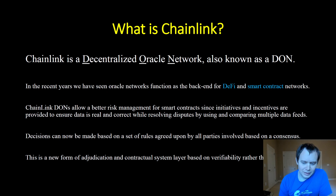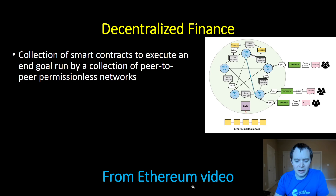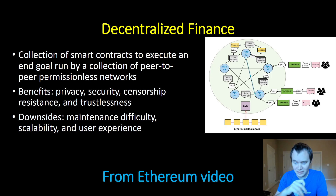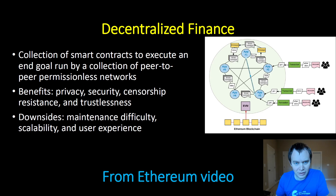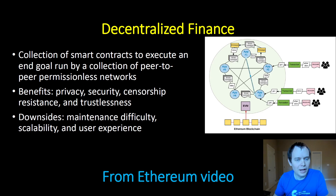A collection of smart contracts can execute an end goal by a collection of peer-to-peer permissionless networks. The benefits include privacy, security, censorship resistance, and trustlessness. The downsides are maintenance difficulty, scalability, and user experience — and the whole idea is that yes, we understand these things exist today and developers are working on fixing them in a way that does not compromise decentralization, going back to the blockchain trilemma.